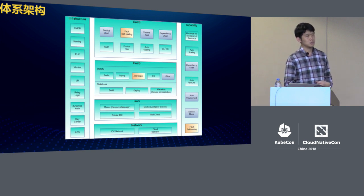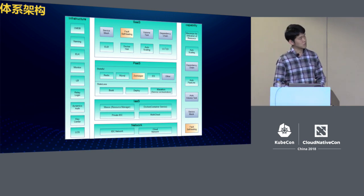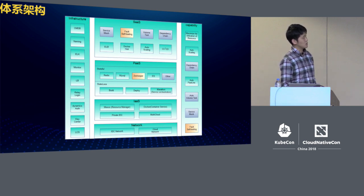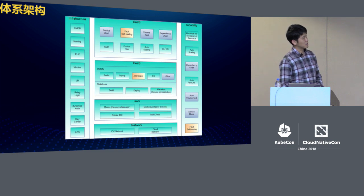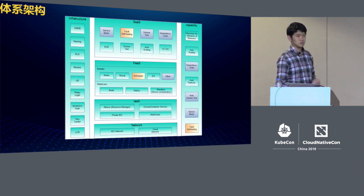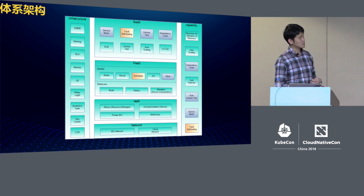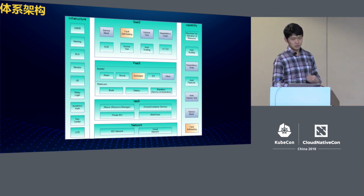This is the architecture of our system. On the left side is the infrastructure that we rely on, and on the right-hand side are the capabilities we aim to achieve. The green part represents what we have done, the orange part shows what we are working on, and the gray parts are things we aim to achieve in the future.